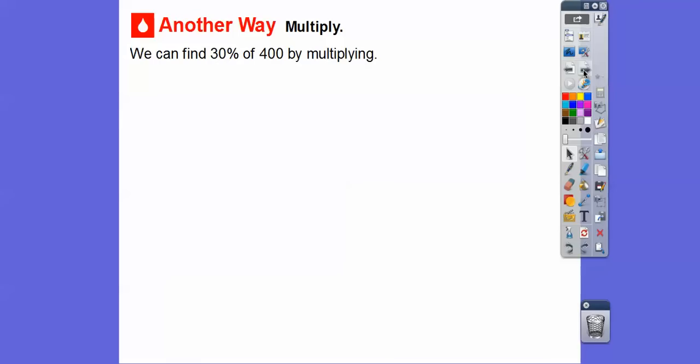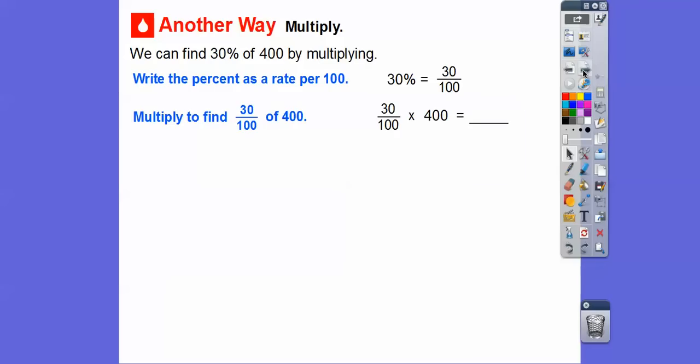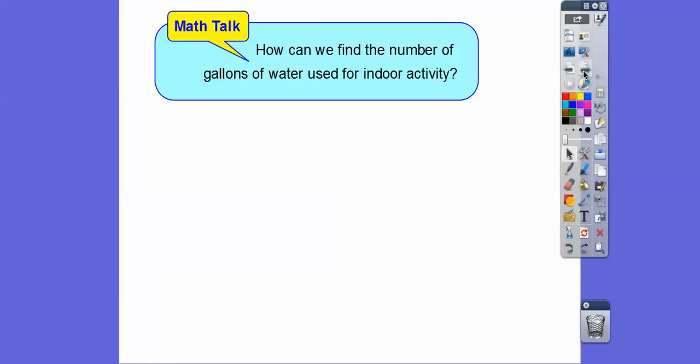Here's another way we can multiply. We can find 30% of 400 by multiplying. Write the percent as a rate per 100. So 30% is 30/100. Then we can multiply 30/100 of 400. Remember, 'of' means multiply. So 30/100 times 400. We got two zeros downstairs that can cancel out two zeros upstairs. So we're left with 30 times 4. 3 times 4 is 12, so 30 times 4 is 120. So 30% of 400 gallons is 120 gallons.